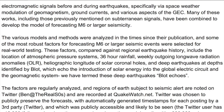These factors, compared against regional earthquake history, include the location of atmospheric pressure systems, 36-hour rainfall, weekly outgoing long-wave radiation anomalies, heliographic longitude of solar coronal holes, and deep earthquakes at depths identified by BLOT, which echo the introduction of solar energy into the global electric circuit and the geomagnetic system. We have termed these deep earthquakes BLOT ECHOs.